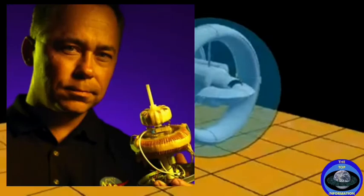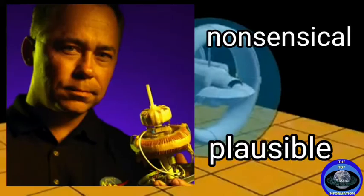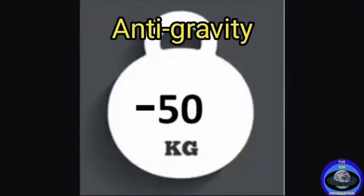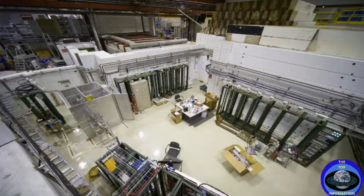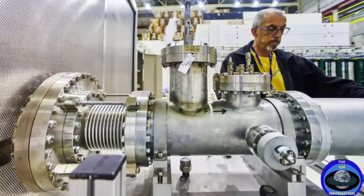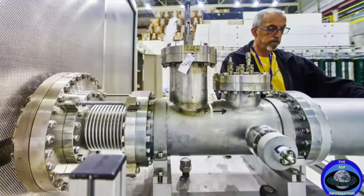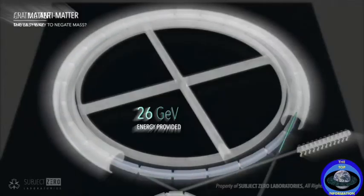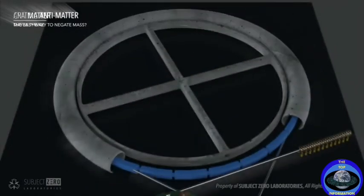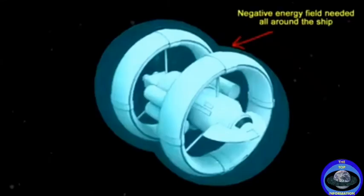Even this problem would one day have a solution. But Dr. Harold White brought the warp drive from nonsensical to plausible. The biggest remaining problem is anti-gravity — we don't actually know how it behaves or what exactly it is. Tests at the GBAR facility may give us some clues this decade. The goal at GBAR is to test Einstein's weak equivalence principle, which states that the trajectory of a test particle is independent of its composition and internal structure when only submitted to gravitational forces — a principle never tested with antimatter. GBAR will directly measure the free-fall acceleration of neutral antihydrogen atoms in the terrestrial gravitational field. If the experiment is successful and antimatter turns out to be repelled by gravity, it could be used as the exotic matter that Alcubierre described.